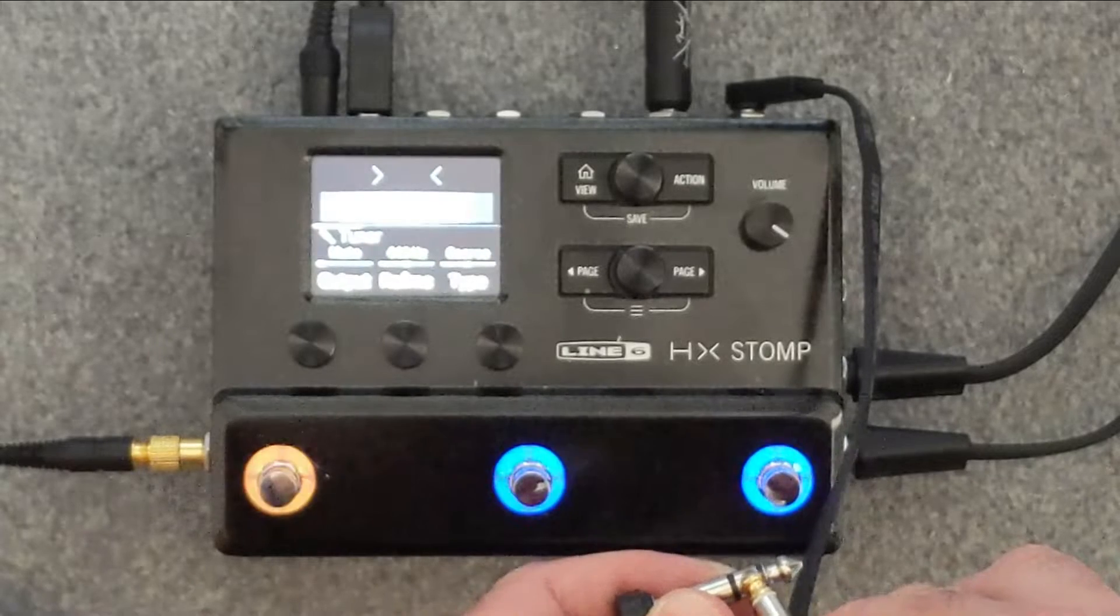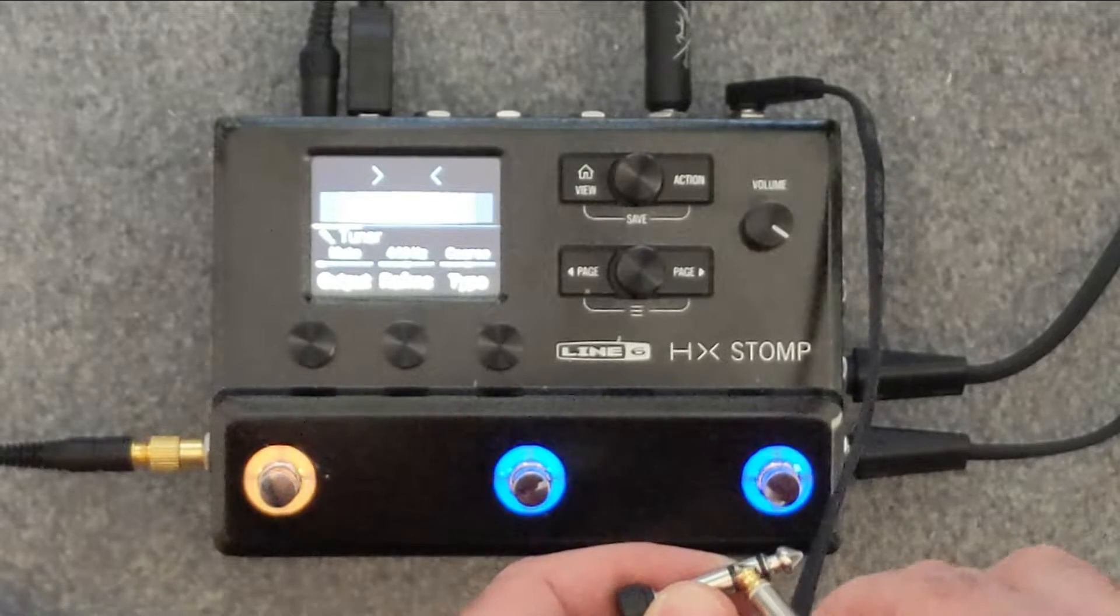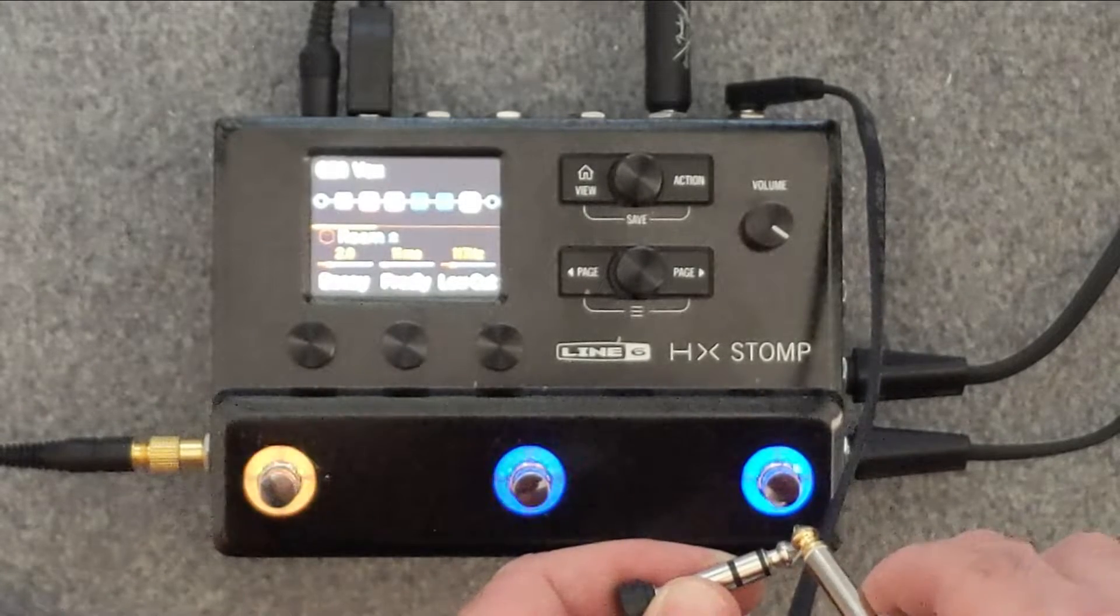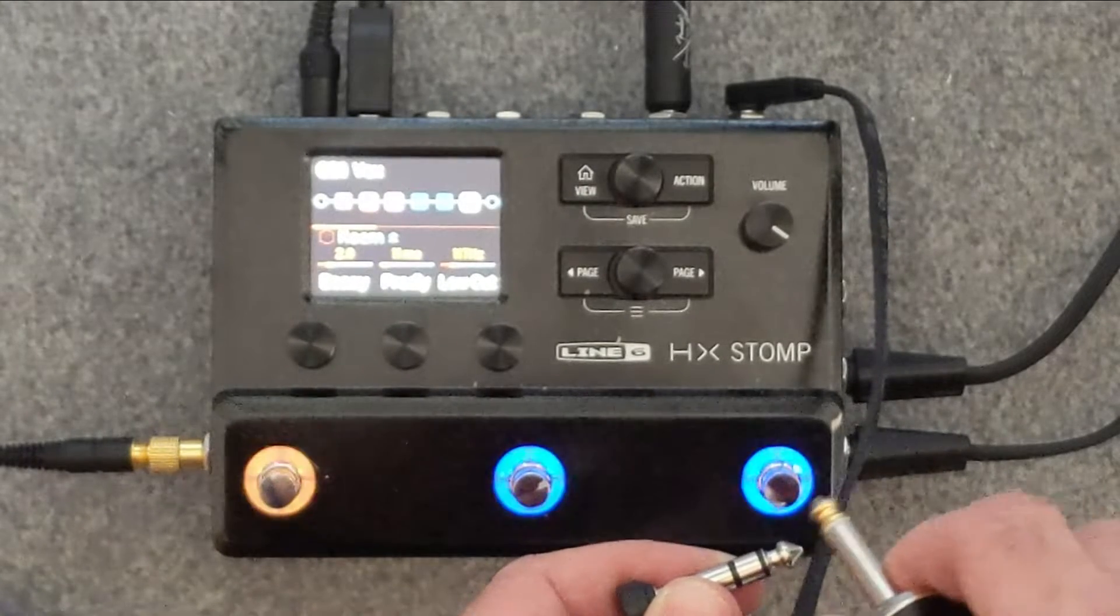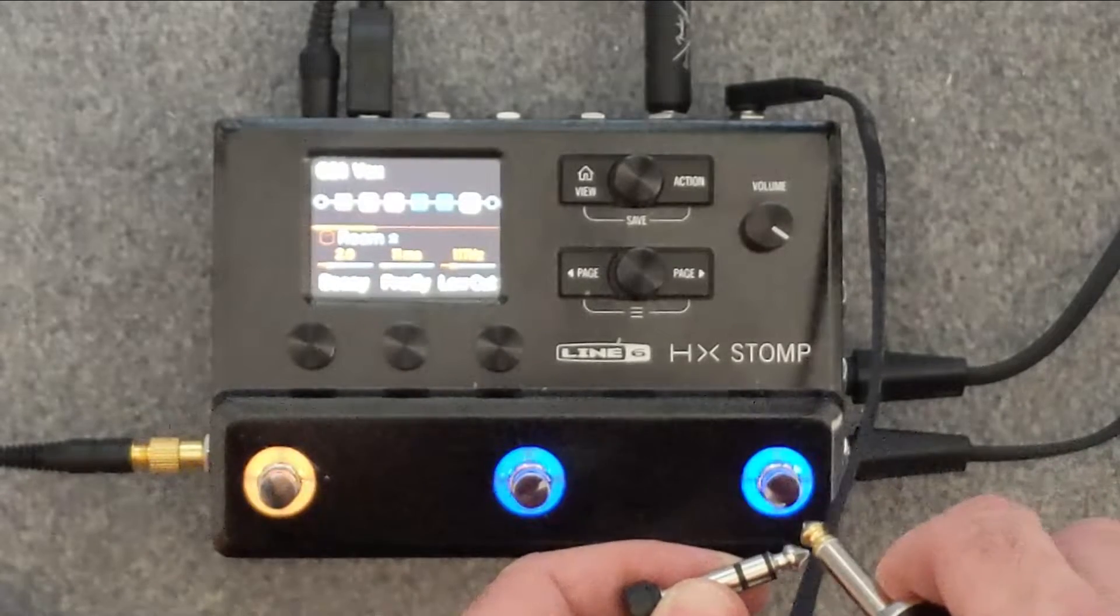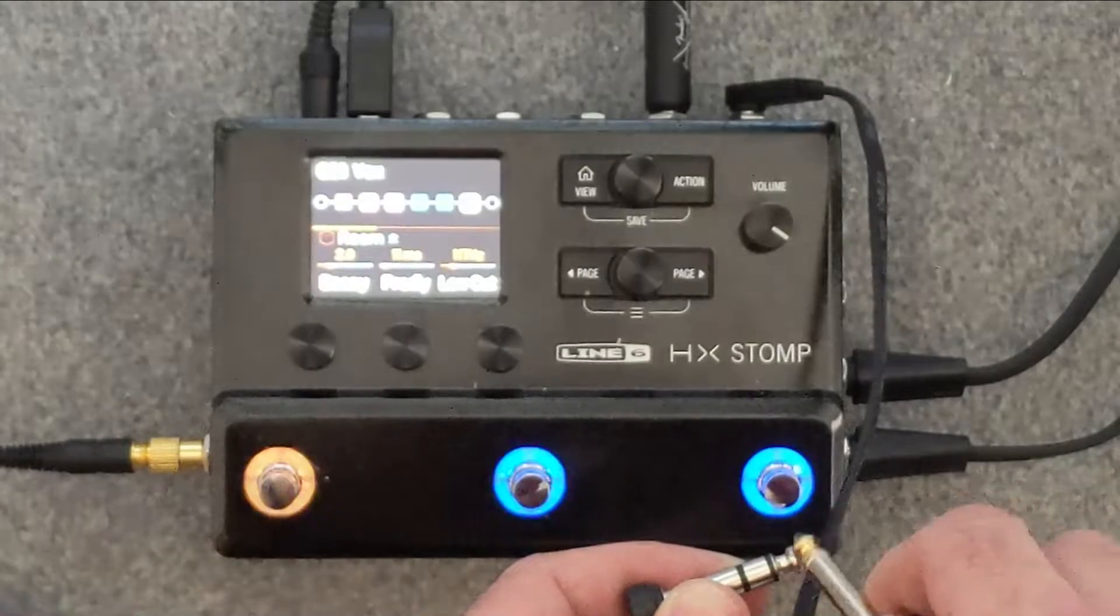If you use a patch cable to connect either the tip or the ring to ground - or the current in this case - the circuit is closed. Depending on if you connect the tip or the ring, the HX Stomp knows whether you want to turn on the reverb or tap tempo or turn on the tuner.